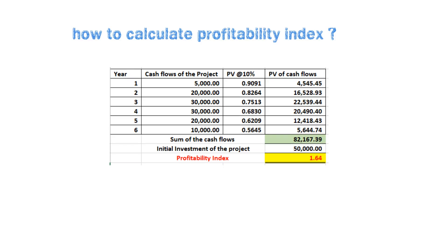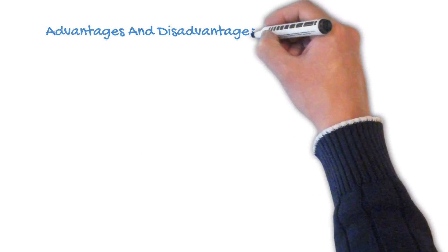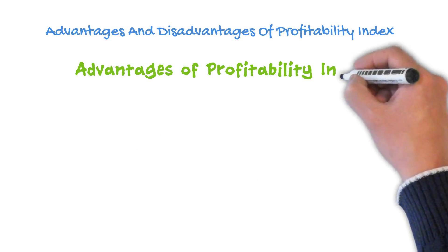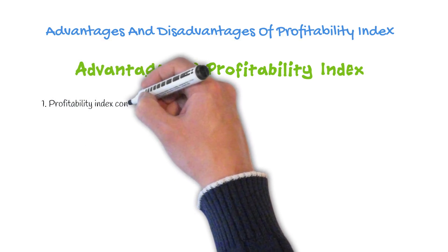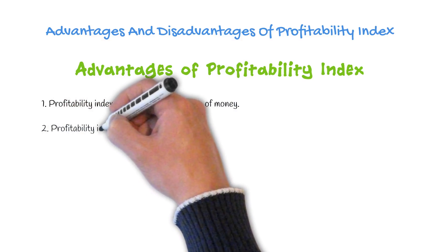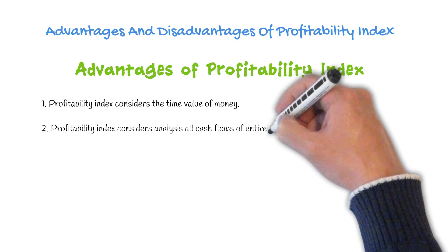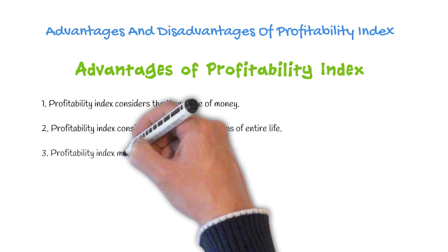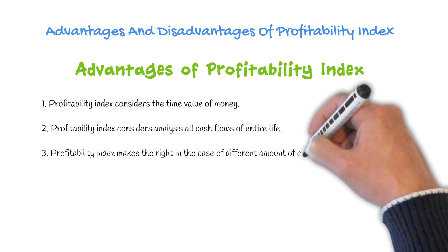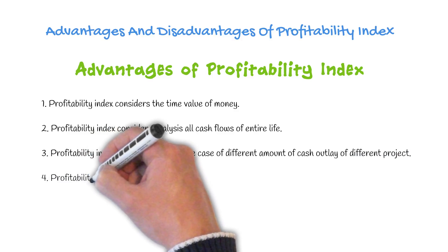Now we are going to discuss the advantages and disadvantages of Profitability Index. The advantages are: First, Profitability Index considers the time value of money. Second, Profitability Index considers all cash flows of the entire life of the project. Third, Profitability Index makes the right decision in the case of different amounts of cash outlay for different projects. Fourth, Profitability Index ascertains the exact rate of return of the project.